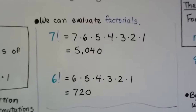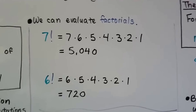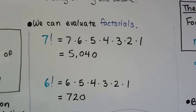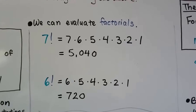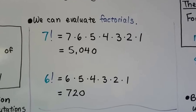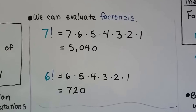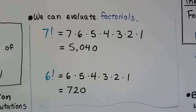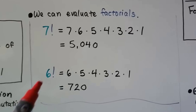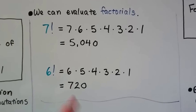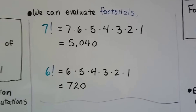And we can evaluate factorials. 7 factorial is equal to 7 times 6 times 5 times 4 times 3 times 2 times 1. We do the multiplication and get 5040. 6 factorial is equal to 6 times 5 times 4 times 3 times 2 times 1 — this started with a 6 — and that's equal to 720.